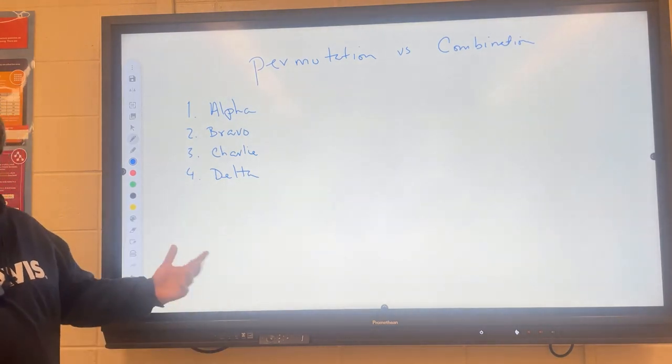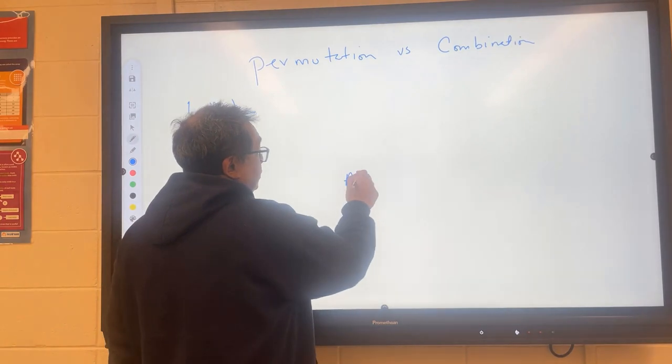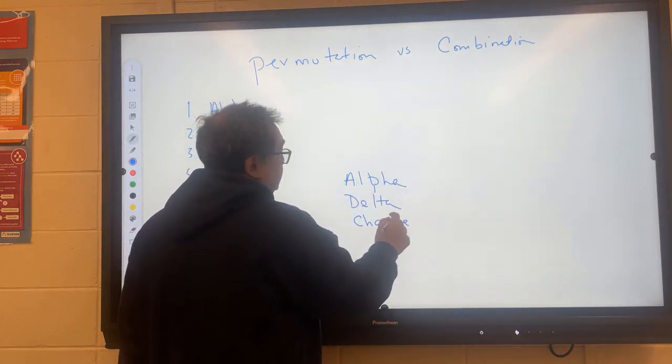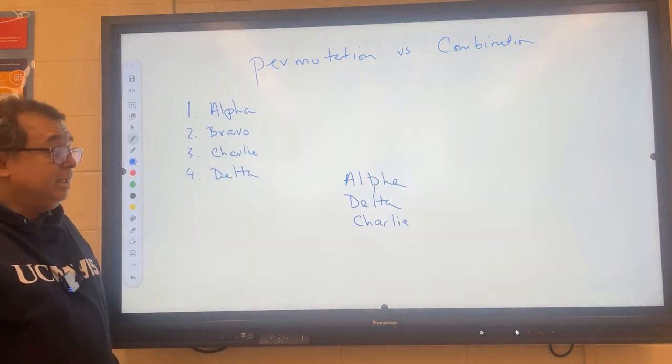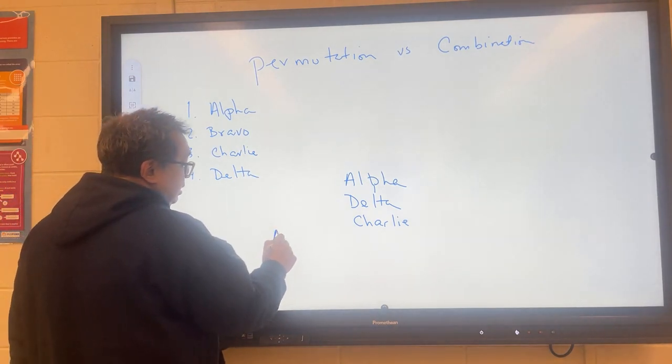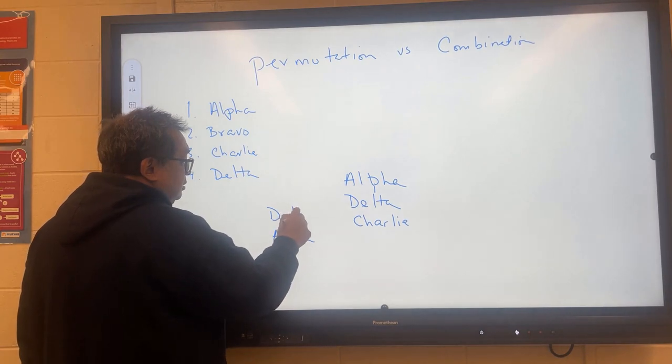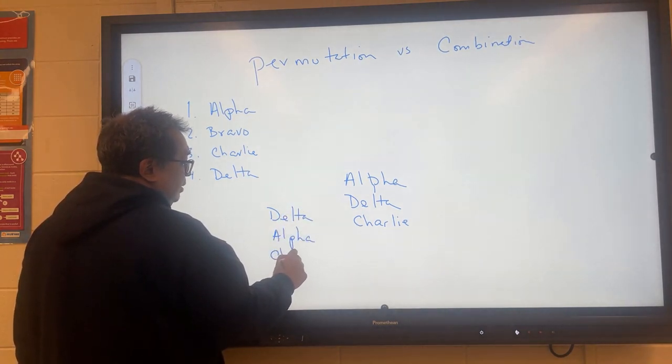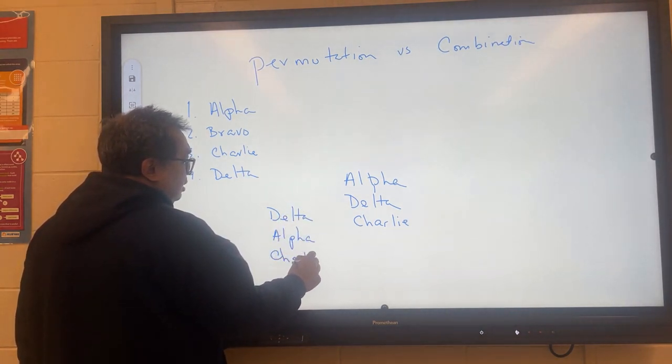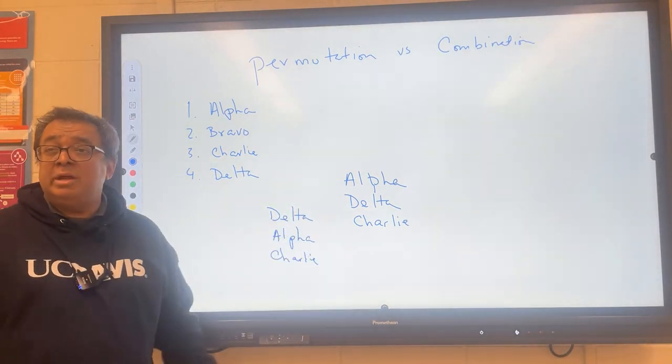So one possible outcome might be alpha comes in first. So this would be an example of an output. Now if alpha came in second and delta came in first and Charlie still came in third, is that considered the same outcome or a different outcome in the race?